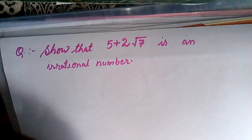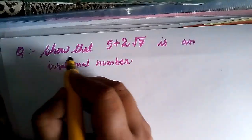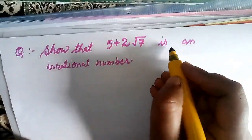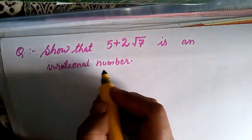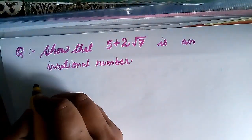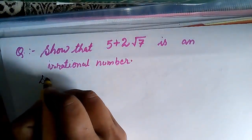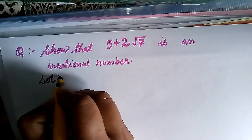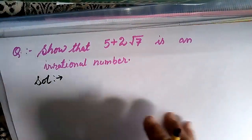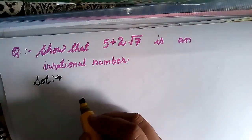Next is an important question — it was also in the board examination this year in the standard paper. We have to prove that 5 + 2√7 is an irrational number. We know √7 is irrational by the standard proof.